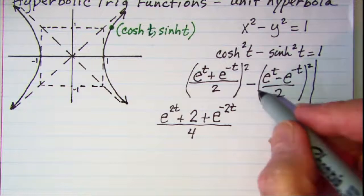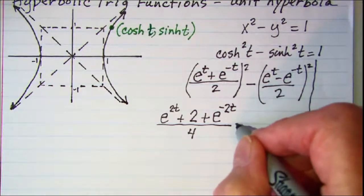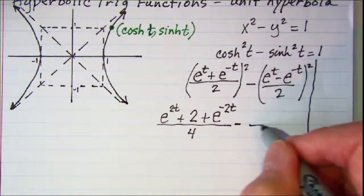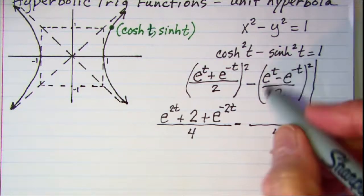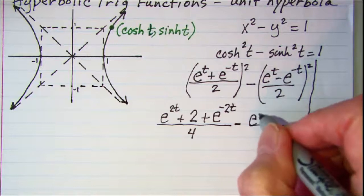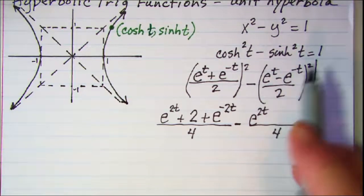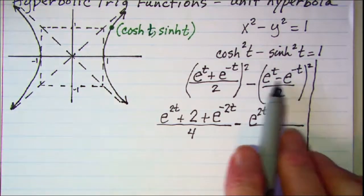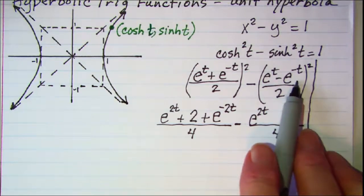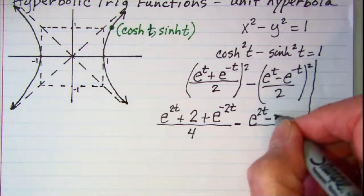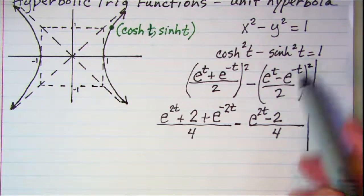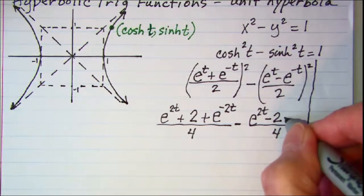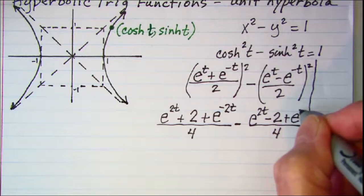The same thing is done here. I have a minus in between there. The denominator is 4. When I square the first term I get e to the 2t. And then the product of these will be a negative 1. Doubled is negative 2. And then square my last term that's e to the negative 2t.